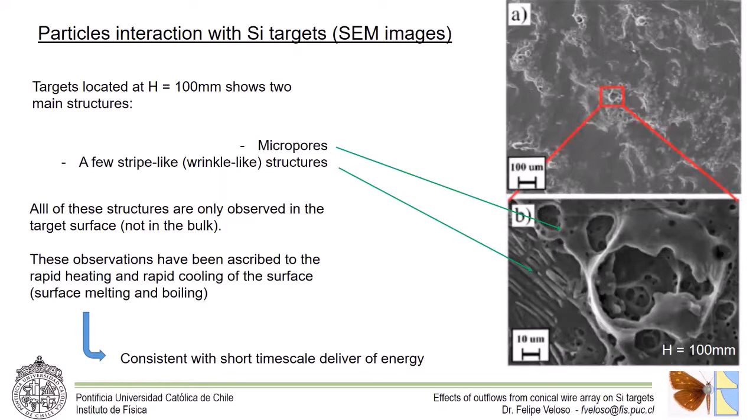We can easily see two types of structures forming the surface. First, micropores, and second, stripe-like or you may refer to them as wrinkle-like structures distributed in the surface. All of the surfaces are only observed in the target and not in the bulk, which is expected from the penetration depth previously mentioned. All of these observations also indicate a rapid heating and rapid cooling of the surface, which is consistent with a short timescale delivery of the energy produced by the outflows of the conical wire array.